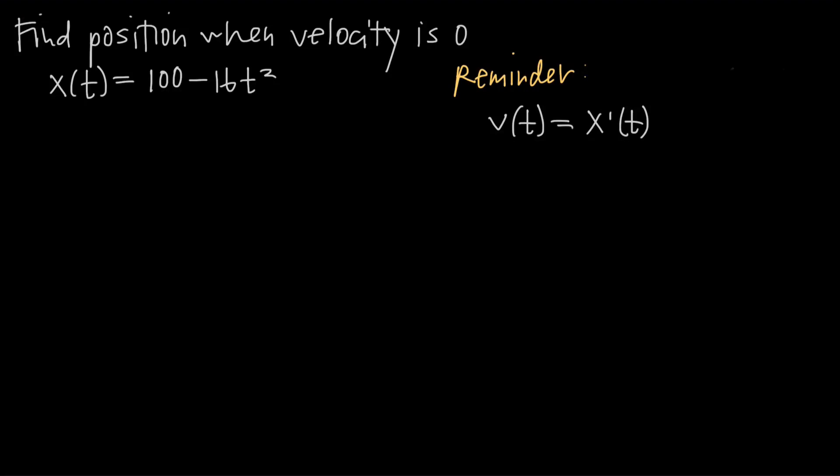In this video we're talking about the position function, and we're going to be doing a really simple problem that asks us to find position when velocity is 0. So we've been given the position function x(t) is equal to 100 minus 16t squared. And remember that a position function just models the position of an object over time t.